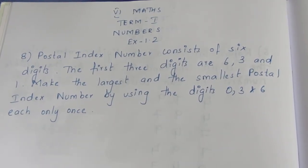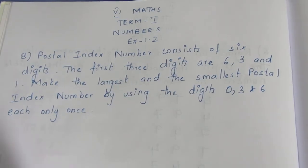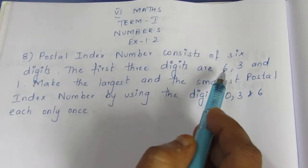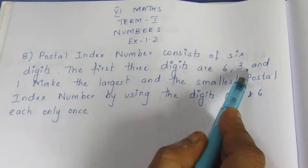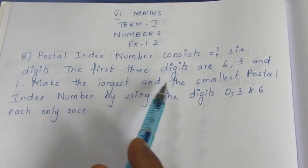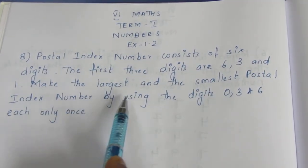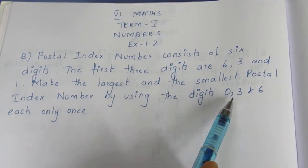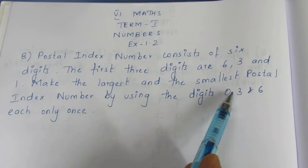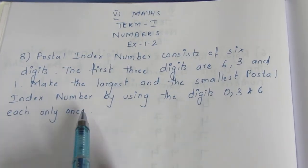A postal index number consists of 6 digits. The first 3 digits are 6, 3, and 1. Make the largest and the smallest postal index number by using the digits 0, 3, and 6, each only once.